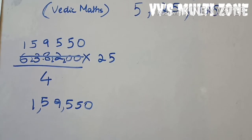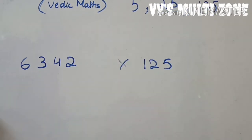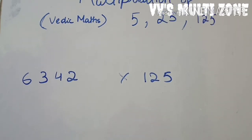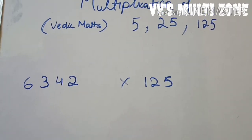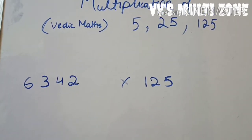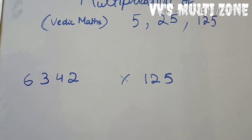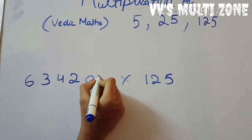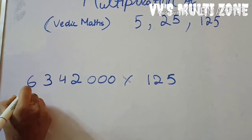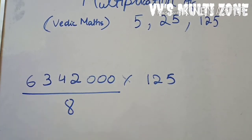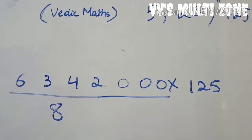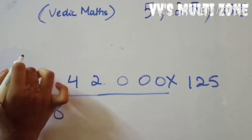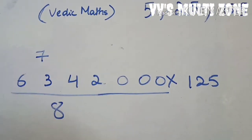Now we'll go to multiplication of 125. Remember: for 5 add one zero, for 25 add two zeros, and for 125 add three zeros and divide by eight. Now we'll divide by eight.